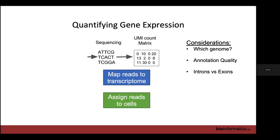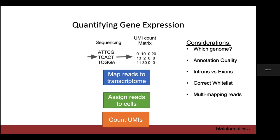Then you assign reads to cells — you just need the correct whitelist for your cell barcodes. Then you count the UMIs. One big question when counting UMIs is how to deal with multi-mapping reads — a read that maps to three different genes. CellRanger's current rule is to not count it for any of them, removing all multi-mapping reads. This causes undercounting of genes with close homologues in the genome, since many reads will multi-map between the two homologues.